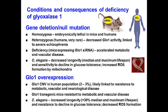Deficiency in mice can be engineered by expression of glyoxalase 1 siRNA, and this produces a phenotype of accelerated metabolic and vascular disease. Silencing of glyoxalase 1 in C. elegans decreases lifespan and produces sensitivity to declining glucose tolerance and increased reactive oxygen species formation from mitochondria.